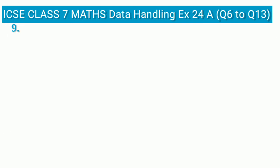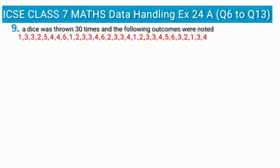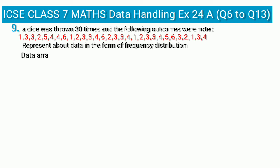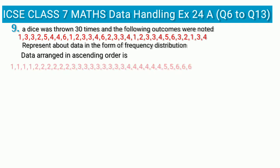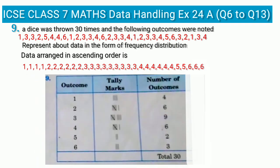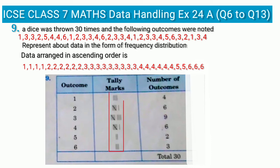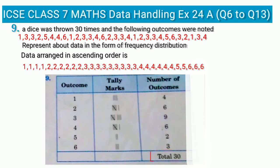Question 9: A dice was thrown 30 times and the outcomes are noted — represent the data as a frequency distribution. This is similar to question 8. The three column headings are outcome, tally marks, and number of outcomes. Since a dice can show outcomes 1 to 6, we write tally marks for each outcome and record the frequencies. Adding all frequencies gives a total of 30.